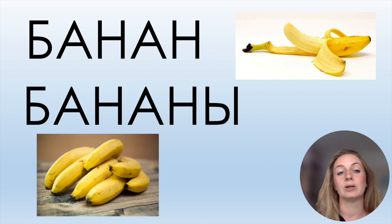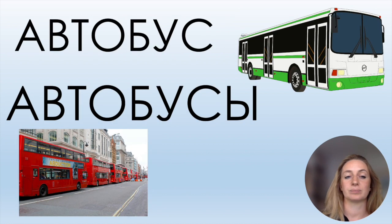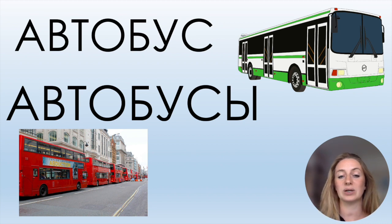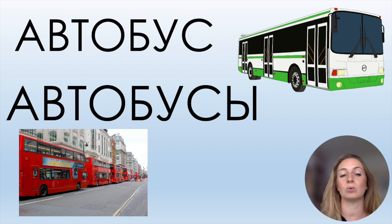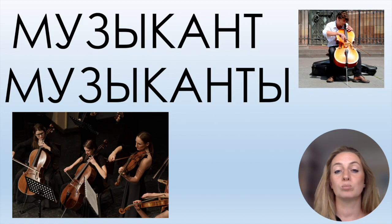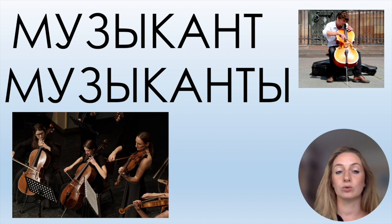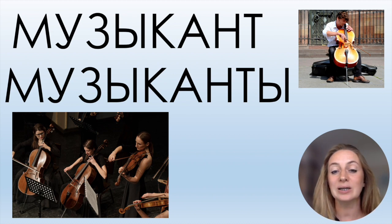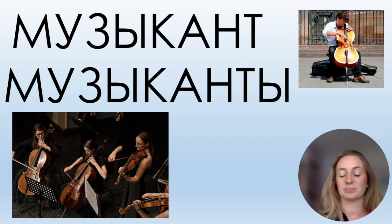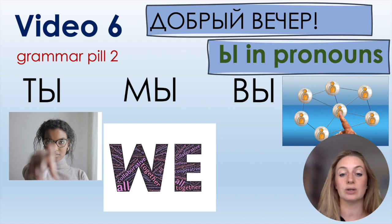Some more examples for the plural: БАНАН — one banana; in plural БАНАНЫ. АВТОБУС — one bus; АВТОБУСЫ — three, four, or more buses. МУЗЫКАНТ — one musician; in plural МУЗЫКАНТЫ. In English you normally put S at the end of the noun: bananas, buses. In Russian you put Ы — not always, but often.